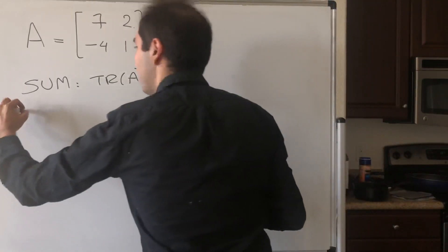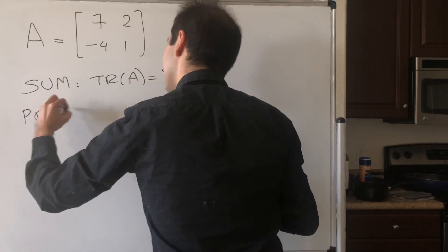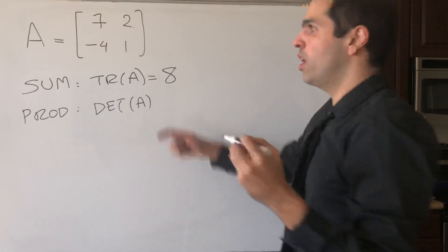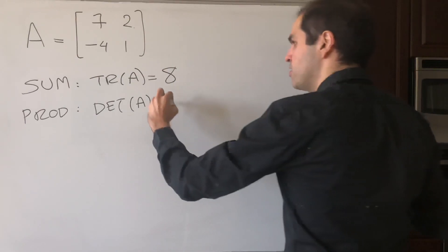And the product of the eigenvalues is just the determinant of A, which is 7 times 1 plus 2 times 4, which is 15.